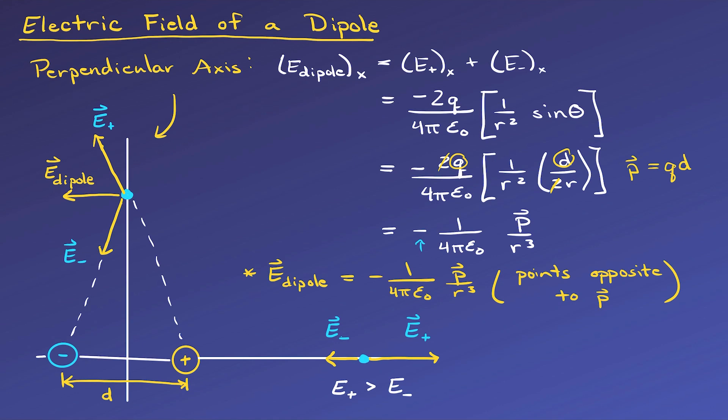Not only that, but now it points in the opposite direction of the dipole moment. The electric field of the dipole along the axis that it was pointing along was in the same direction.